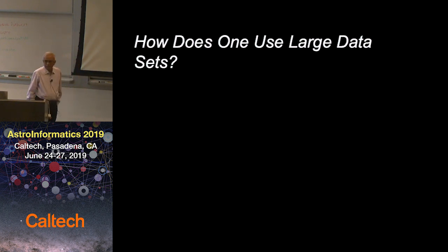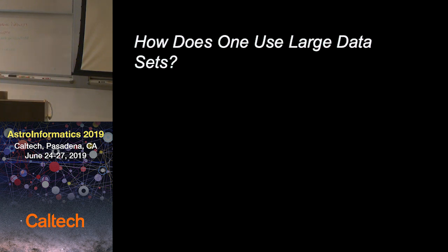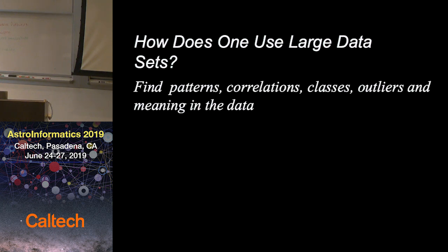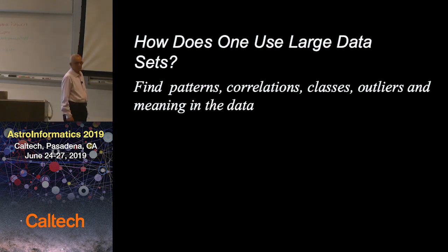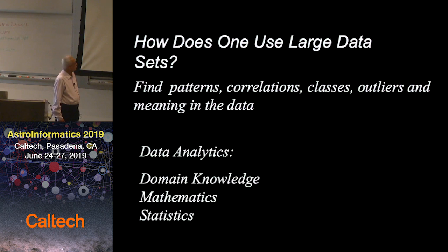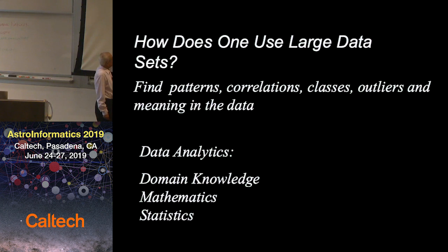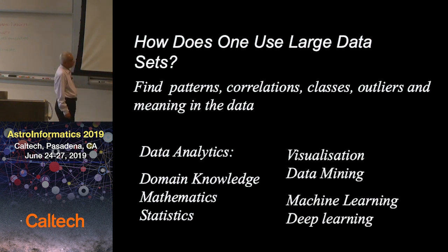So the first slide is: how does one use large data sets? That is what we are supposed to be doing in astroinformatics. And we have seen yesterday through several talks that we are looking for patterns, correlations, classes, outliers, and meaning in the data. And in the keynote address yesterday, we talked about going back to domain knowledge and making it important again, which made me very happy. And then you need maths and statistics, of course.